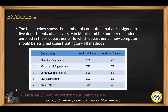Let's look at the solution to this example. The table below shows the number of computers assigned to the five departments of a university in Manila, and the number of students enrolled in each department. To which department should a new computer be assigned using the Huntington-Hill method? The first column is the department, followed by the number of students, and then the number of computers currently assigned.